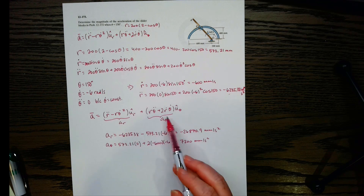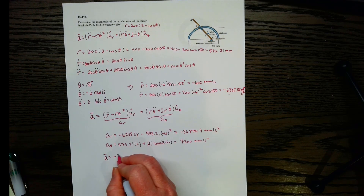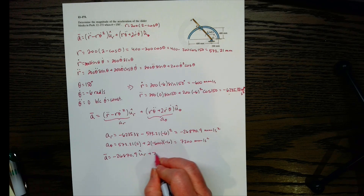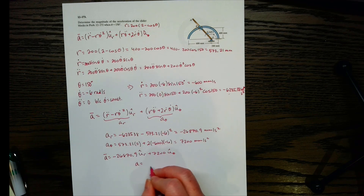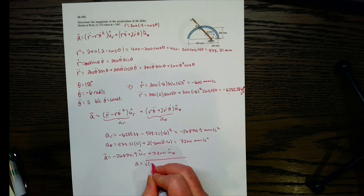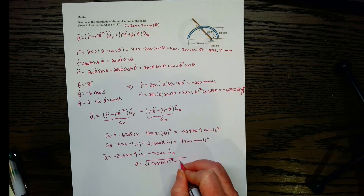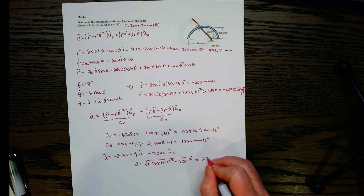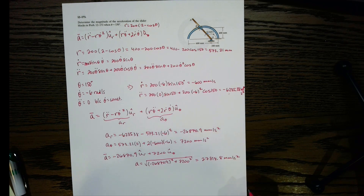These give us our two acceleration components. The acceleration vector is negative 26,870.9 U-sub-r plus 7,200 U-sub-theta millimeters per second squared. To find the magnitude, we take the square root of the sum of the squares of the components, which gives 27,818.8 millimeters per second squared.